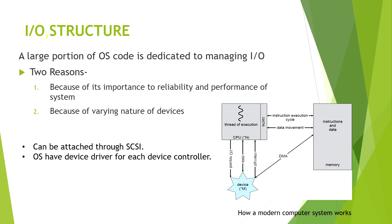Now talking about input-output structure. Two reasons are very important to understand here, because of their importance to the reliability and performance of the system. OS code is dedicated to managing input-output. The first reason is importance to reliability and performance. The second reason is because of the varying nature of devices — there may be a keyboard, a mouse, or any other input or output device. These are asynchronous devices, so the operating system itself does not know at which time input or output will be held, which is why the OS is dedicated to managing it.